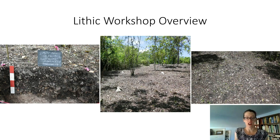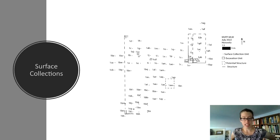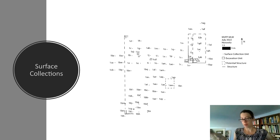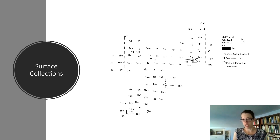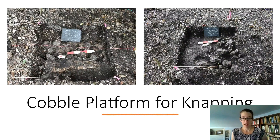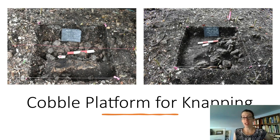Preliminary investigations focused on surface collections to identify the extent of the production area, and test excavations of the workshop and adjacent buildings to understand what occupation was like. The systematic surface collection illustrated that lithic debris was concentrated to the western, downslope side of the investigated area, with densities dropping off to the eastern side where there were more ceramics and an informal structure. This informal structure was probably an area of occupation, which I'll discuss in a moment.